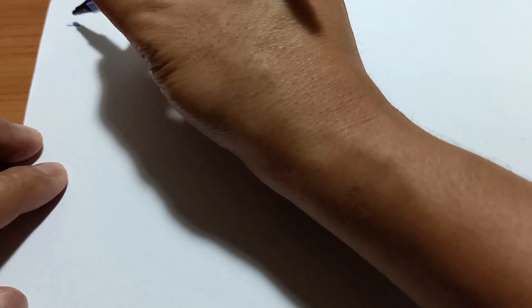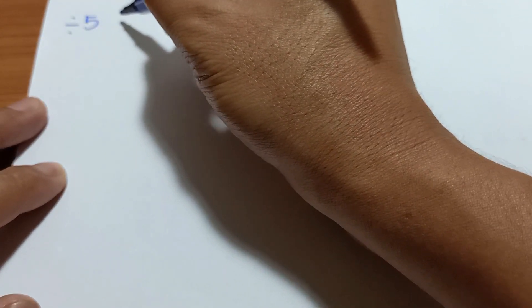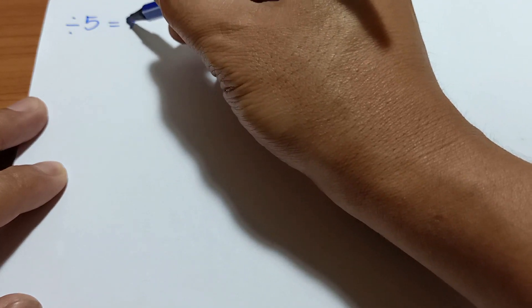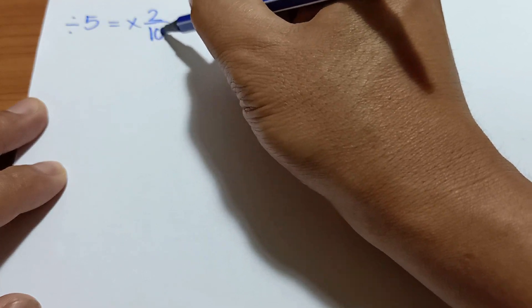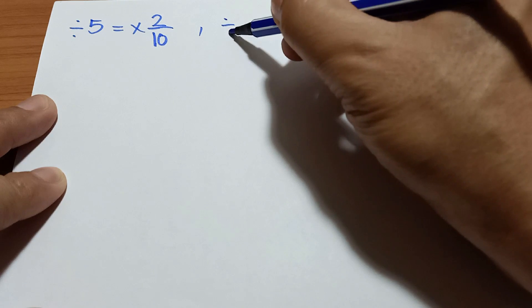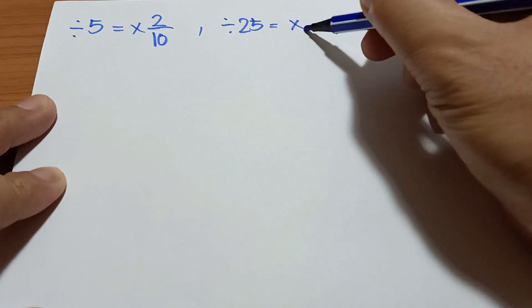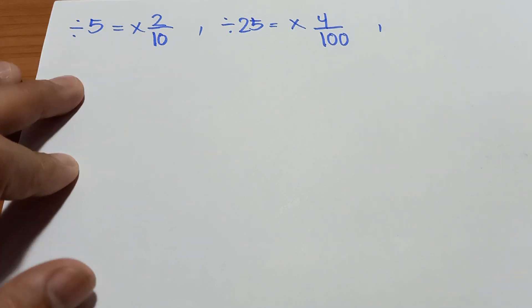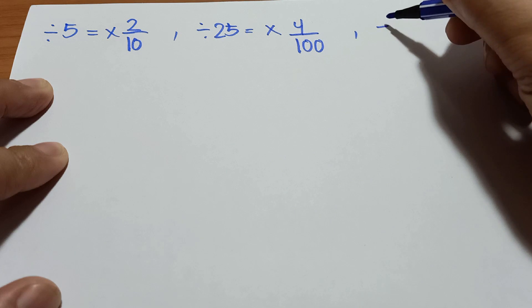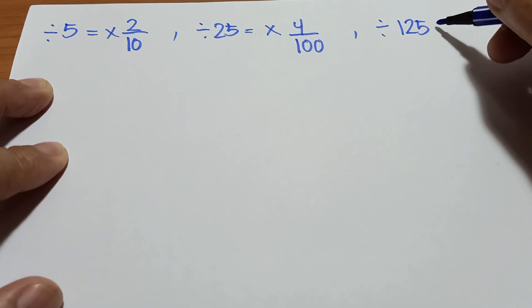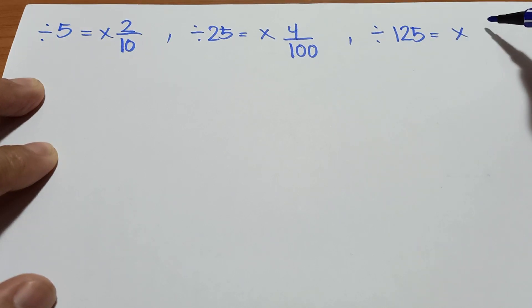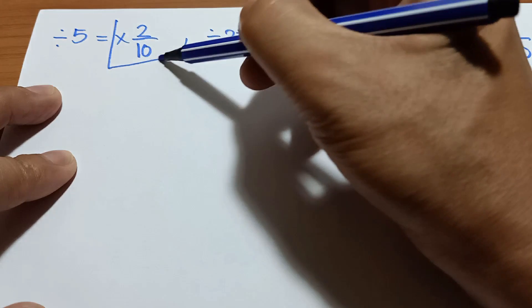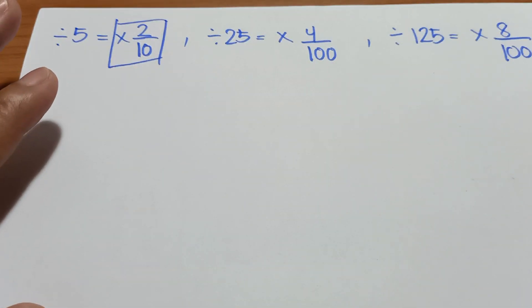Let's have a recap. When dividing a number by 5, we just multiply it by 2 over 10. When we divide the number by 25, we just multiply it by 4 over 100. And when we divide the number by 125, we just multiply by 8 over 1,000. As you can see, this is the basic multiplier.